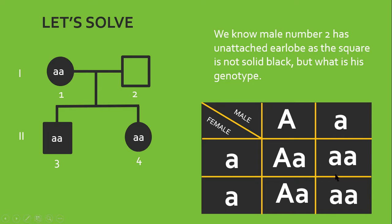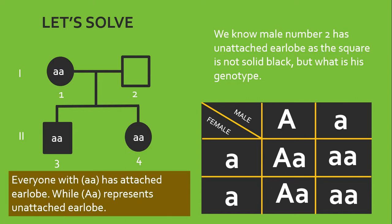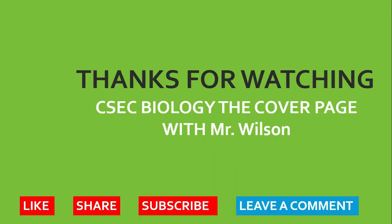We know male number two has an unattached earlobe as a square. It's not solid black or it's not shaded. But what is this genotype? So, we know that he's not homozygous dominant. So, he must be heterozygous dominant. And if you observe here, we're getting two lowercase aa from this cross and two heterozygous. And based on what we're seeing here, we have two lowercase aa. So, it seems as if we would have solved here. Everyone with the lowercase aa has attached earlobe, while the heterozygous form of capital A lowercase a represents unattached earlobe. Hence, the fact that we can pick up persons who are homozygous recessive, as is highlighted in red, we're sure that the father is heterozygous for the trait.